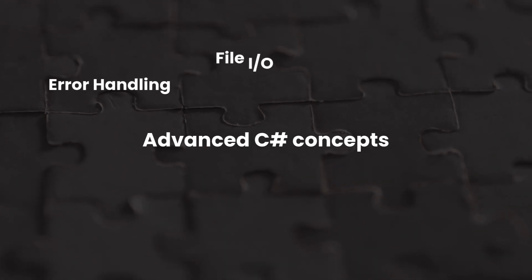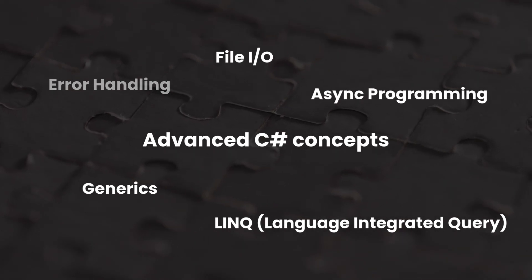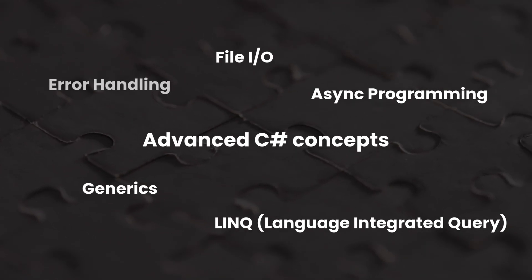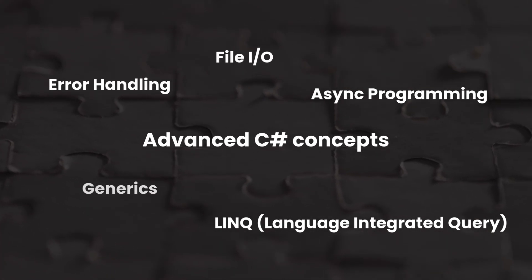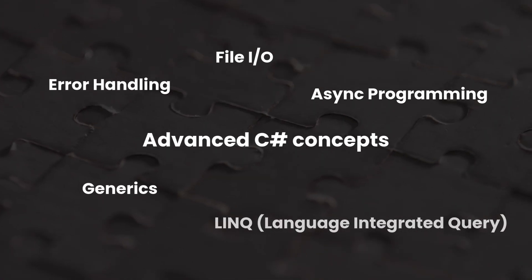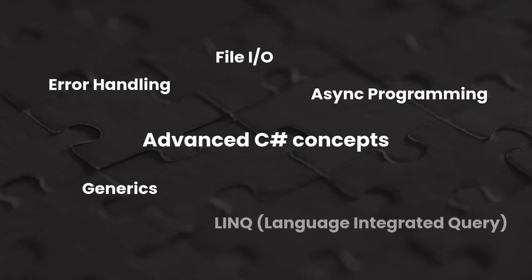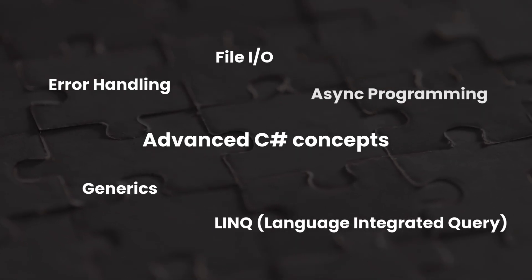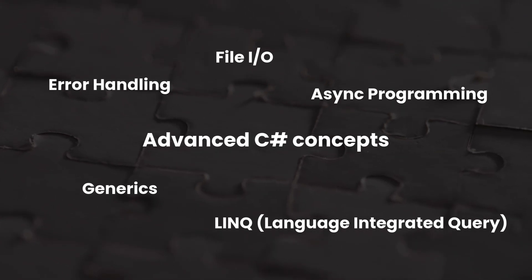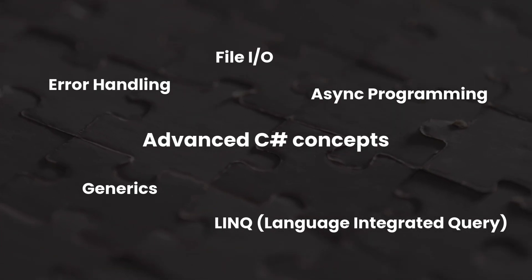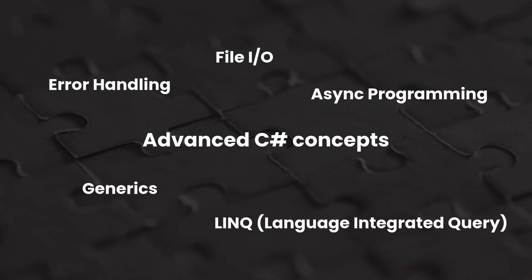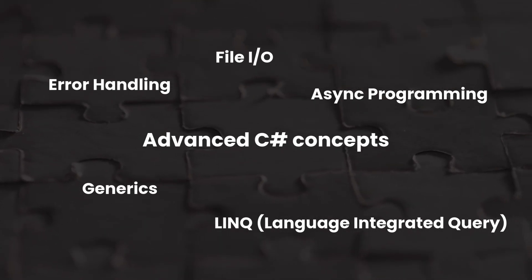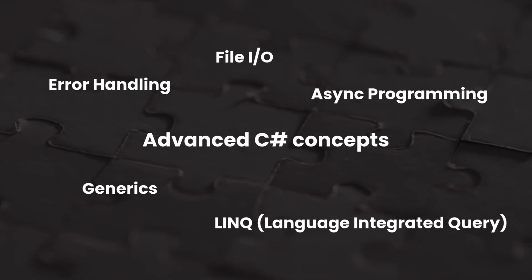We've arrived at the final step: advanced C Sharp concepts, including error handling, file IO, generics, LINQ, asynchronous programming, and more. Error handling ensures your program doesn't crash when something goes wrong. File IO — file input and output — allows reading from and writing to files. Generics enable writing flexible and reusable code. LINQ, or Language Integrated Query, provides a clean and efficient way to query data, and asynchronous programming allows long-running tasks to execute without freezing the program. You don't need to master all of this at once — most of these concepts will make more sense when you actually need them in a project. Even if you understand them now, you'll likely forget them without hands-on practice, so don't worry too much at this stage.